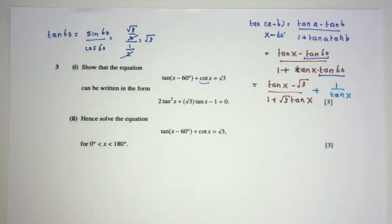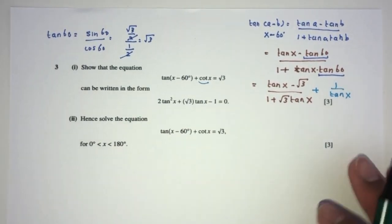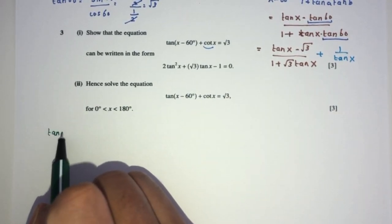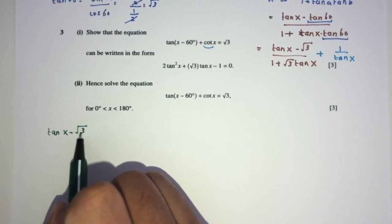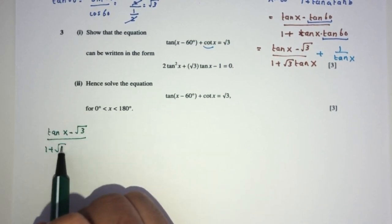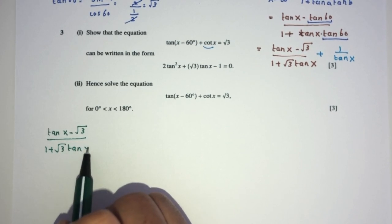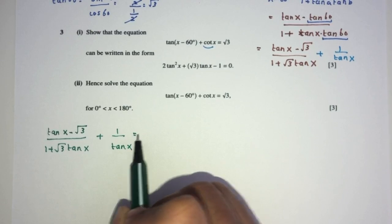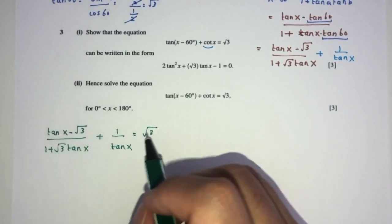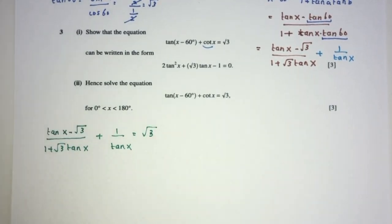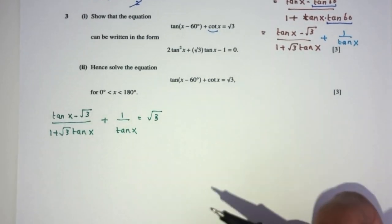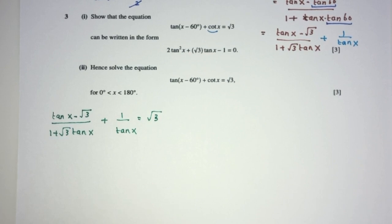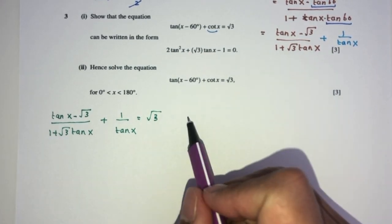Let's rewrite everything down to somewhere with more space. So right now we have tan of x minus root 3 over the value of 1 plus root 3 tan of x, plus cot is 1 over tan x, equals root 3. So now, to simplify this function, what can we do is we can try to simplify. What can we do right now? Let's send this over here.